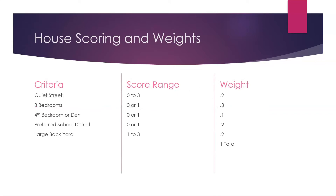Here's an example from our house shopping. Quiet street could be scored from zero to three — a score of zero meant a busy street, while a three is super quiet — and the importance of that was 0.2. Three bedrooms was either yes or no, so zero if it didn't have three bedrooms and one if it did, and that was very important so we gave it a weight of 0.3. The fourth bedroom or den was also yes or no, zero or one, and it wasn't super important, so we attached a weight of 0.1.